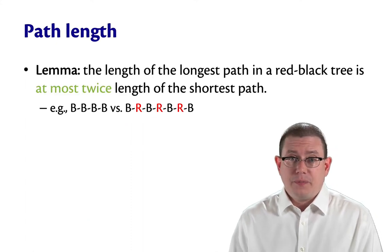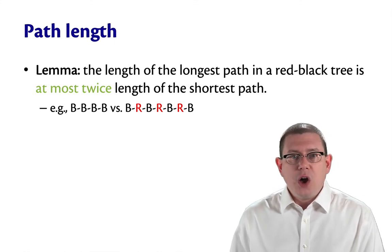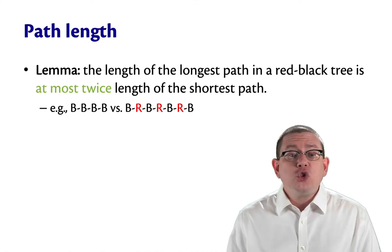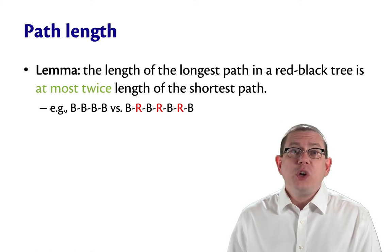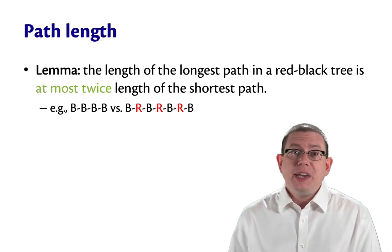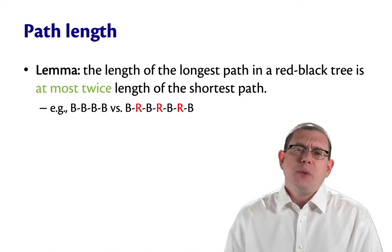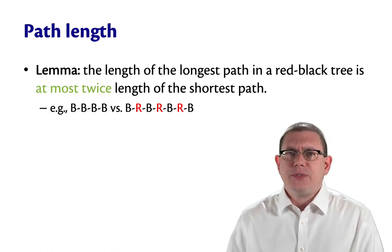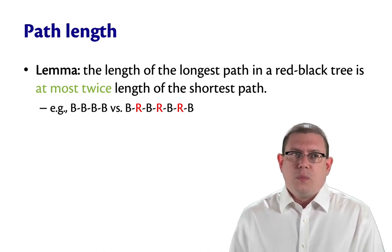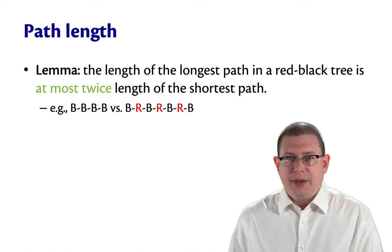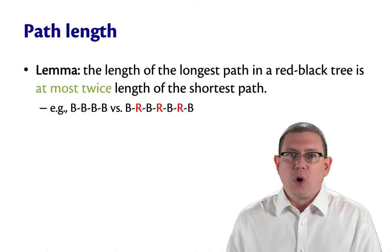What about those path lengths? It's a lemma that we could prove that the length of the longest path in a red-black tree is at most twice the length of the shortest path. You can get some intuition for why that would be true by thinking about any path that has only black nodes. So suppose there's a path in the tree that has four black nodes, and it's only those nodes on that path. Well, by the global invariant, every other path in that tree must have four black nodes.